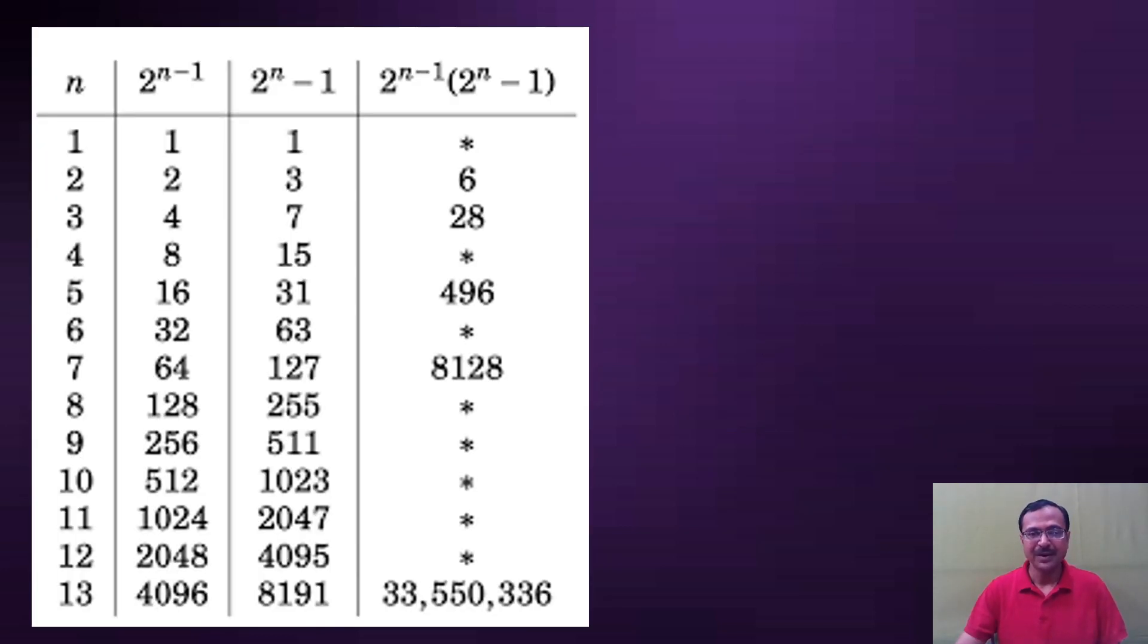Look at this table. Euclid said that 2 raised to power n minus 1, this is one factor, multiplied by 2 raised to power n minus 1. There is a difference between the bracket and the term outside the bracket. This can be a perfect number if the term in the bracket is prime. Now we need to find a value of n for which 2 raised to power n minus 1 is prime.